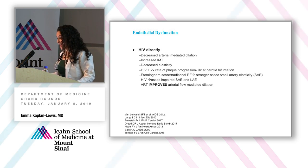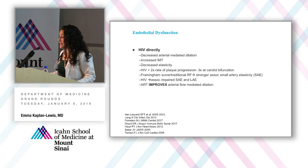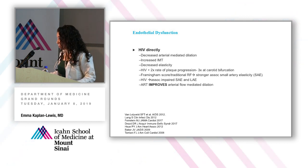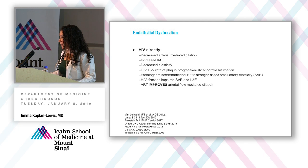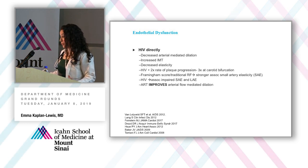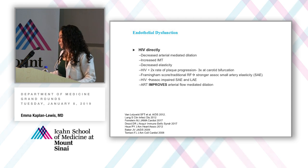For endothelial dysfunction — not totally understood whether it's due to chronic inflammation from HIV or direct HIV infection of endothelial cells — there are studies showing decreased arterial-mediated dilation, increased intima media thickness, decreased elasticity, and more rapid rates of atherosclerosis progression in people with HIV, even with well-controlled HIV. Framingham risk score and traditional risk factors correlate more with small artery endothelial dysfunction, whereas HIV is associated with both small and large artery elasticity abnormalities. Importantly, antiretroviral therapy improves some of this endothelial dysfunction — studies show improvement in arterial flow-mediated dilation pre- to post-treatment.